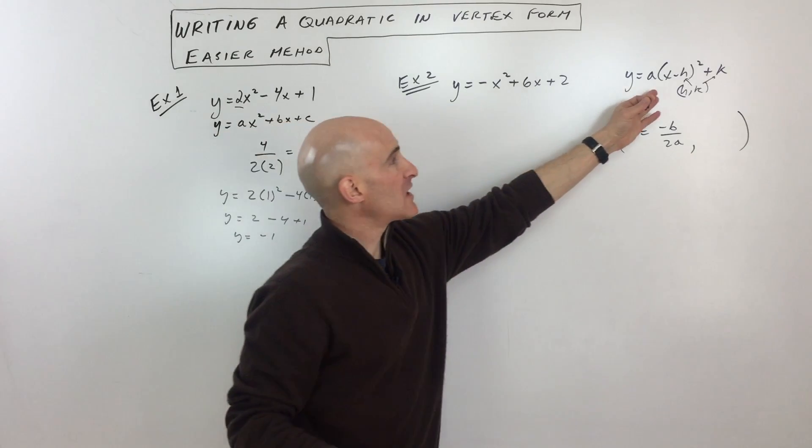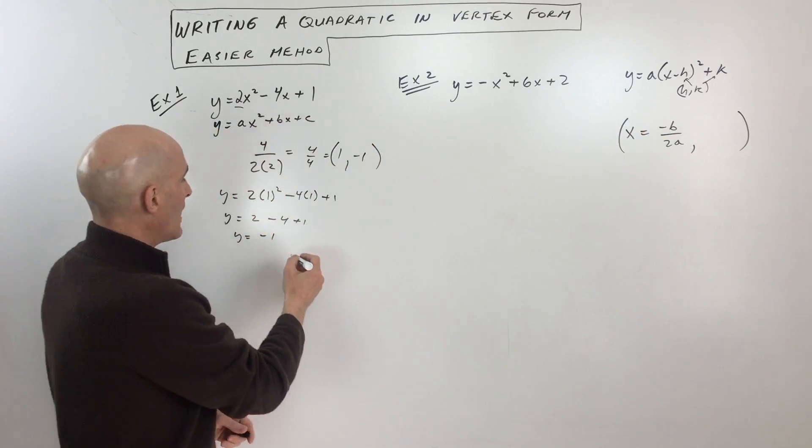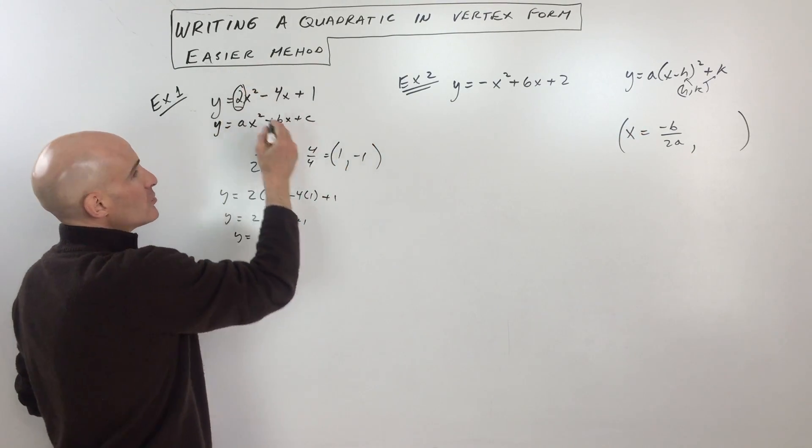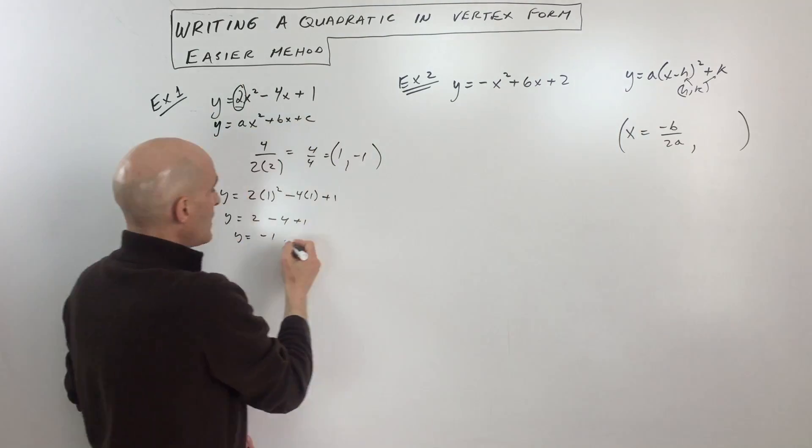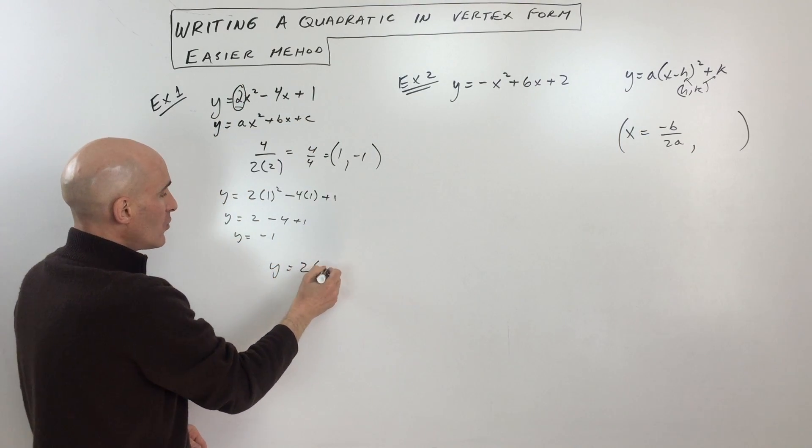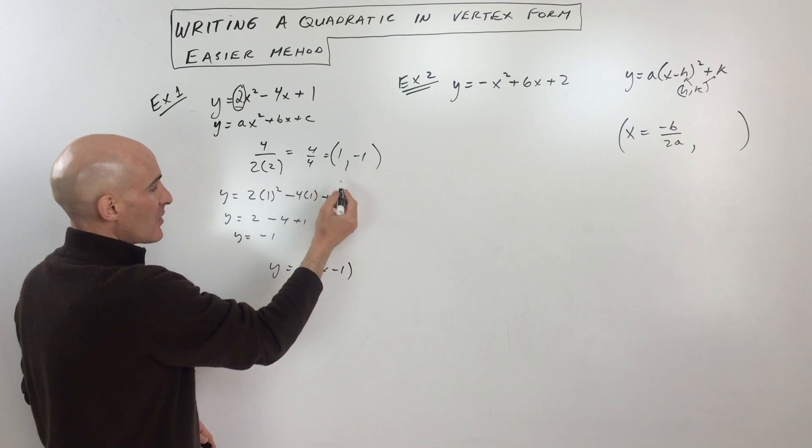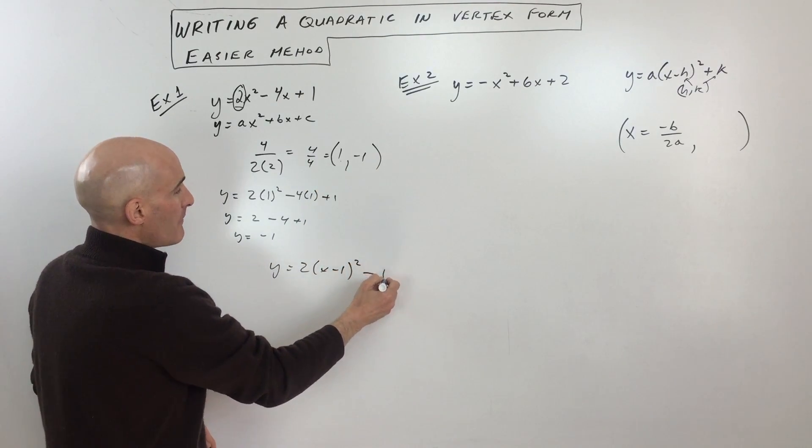So if we go back to our vertex form over here, we can see that a is two. So we're gonna put two in here. So we've got y equals two, x minus one. There's our h squared minus one.